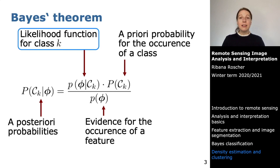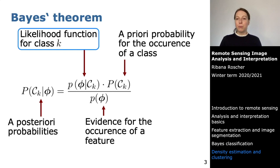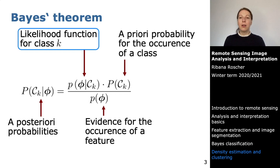In the last lecture we looked at the Bayes theorem, especially the likelihood function. The Bayes theorem is used for maximum likelihood and maximum a posteriori classification. One part of the Bayes theorem is the likelihood function, which you determine for each class using all collected features. We assumed in the last lecture that the data has a Gaussian distribution, so the likelihood function was a Gaussian function.